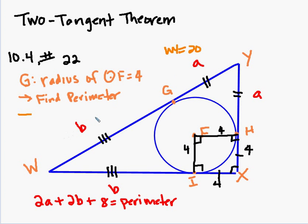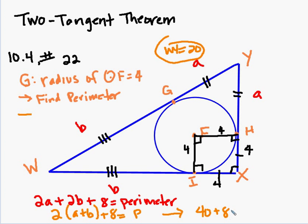We know that WI is equal to a plus b. And we know that we can write this as 2 times (a plus b) plus 8 equals the perimeter. Well, I know if a plus b is 20, then 2 times (a plus b) is going to be 40. So I'm left with 40 plus 8 or 48 equals the perimeter.